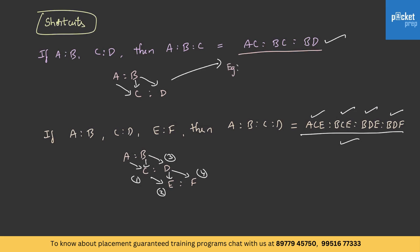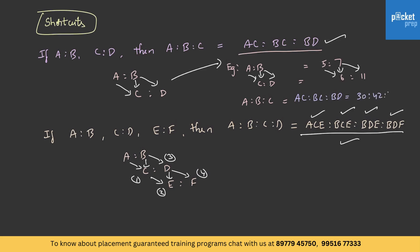Let us try an example. If A is to B is equal to 5 is to 7 and C is to D is equal to 6 is to 11, then A is to B is to C is: 5 into 6 is to 7 into 6 is to 7 into 11. So the value of A·C is to B·C is to B·D will be 30 is to 42 is to 77.